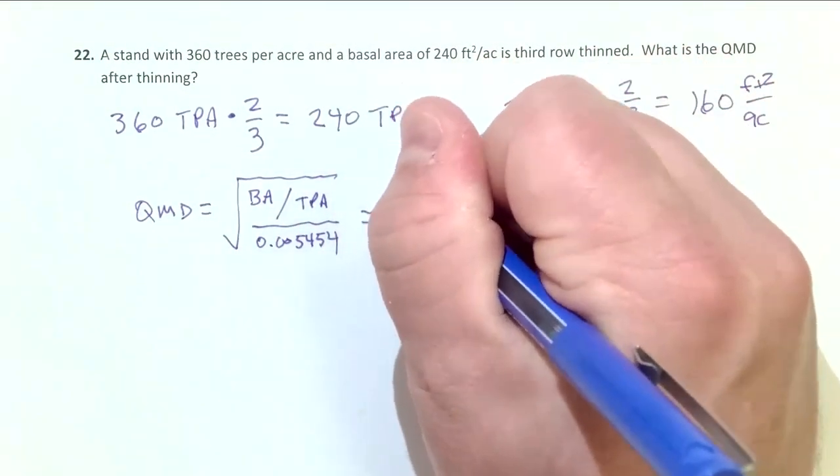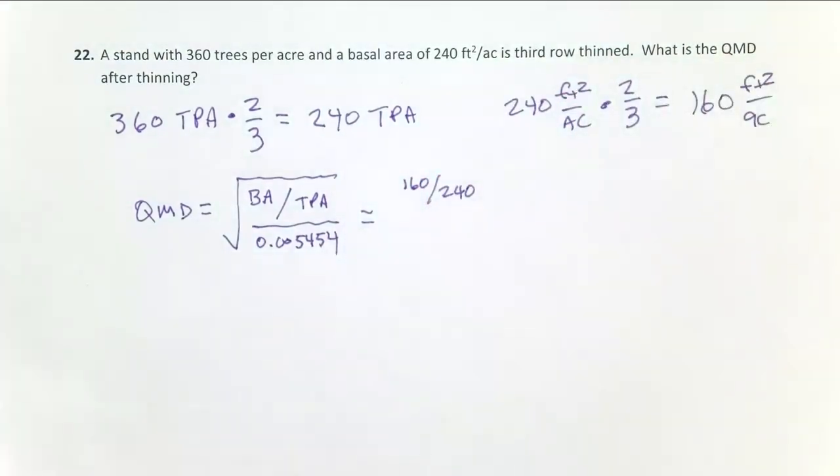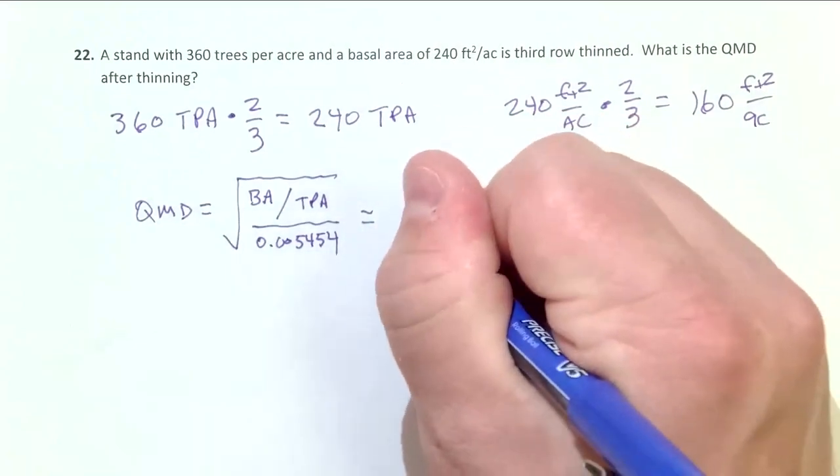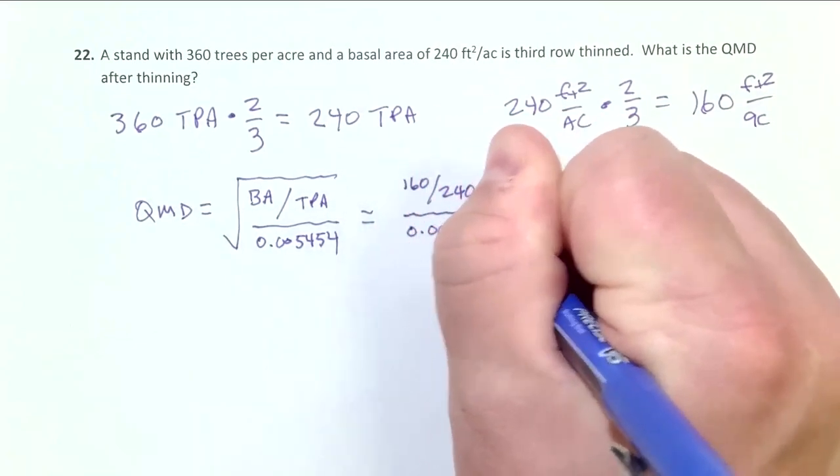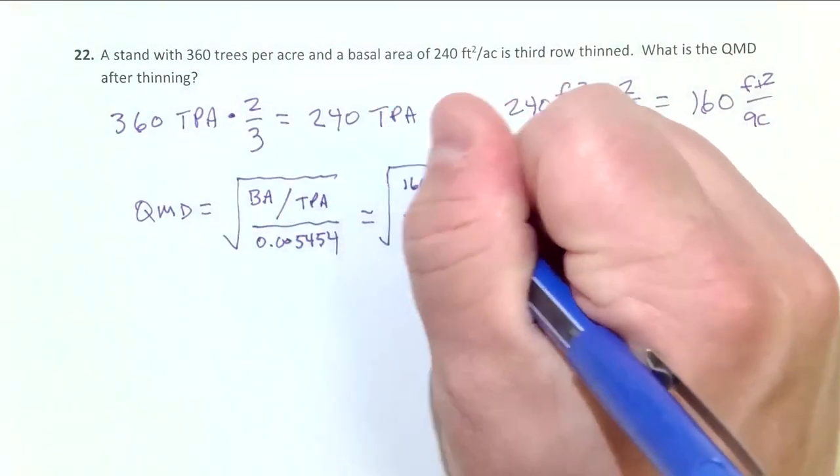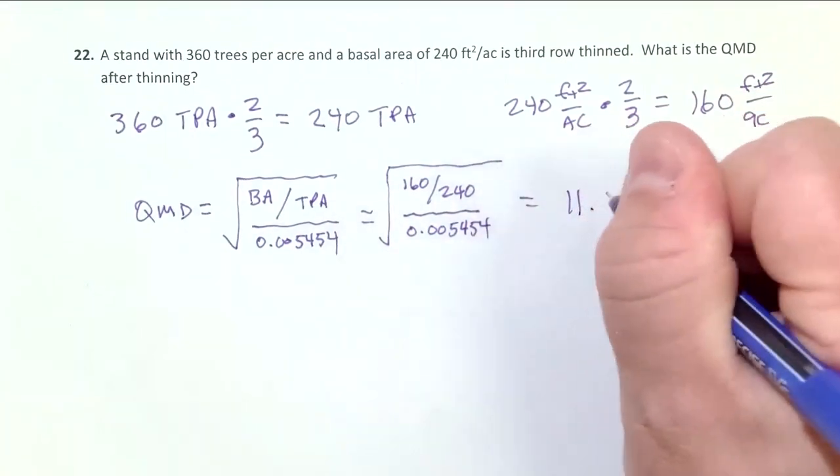So order of operations, I would first divide 160 by 240, get that number, which you can see is going to be two-thirds. Then I would take that number and I would divide it in my calculator by 0.005454. I would have that number. Then I would take the square root of that number. And in that order of operations, I'm going to get 11.1 inches.